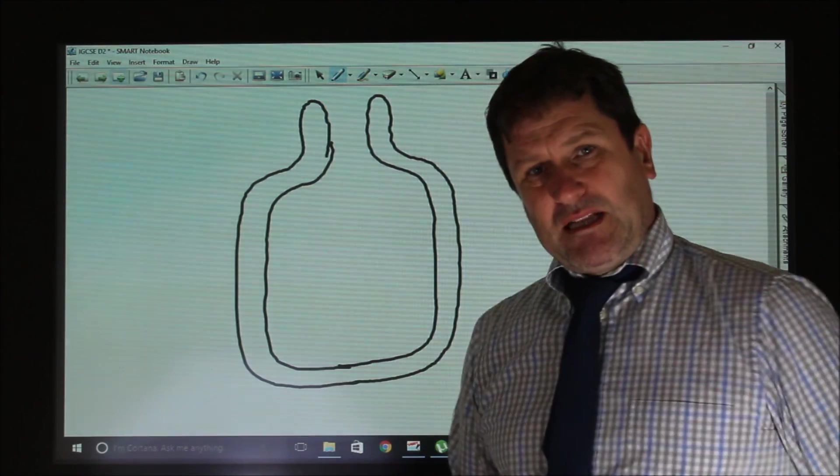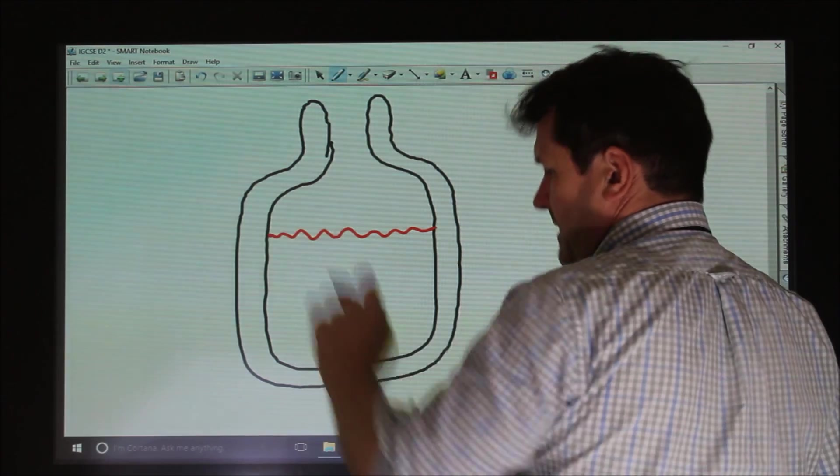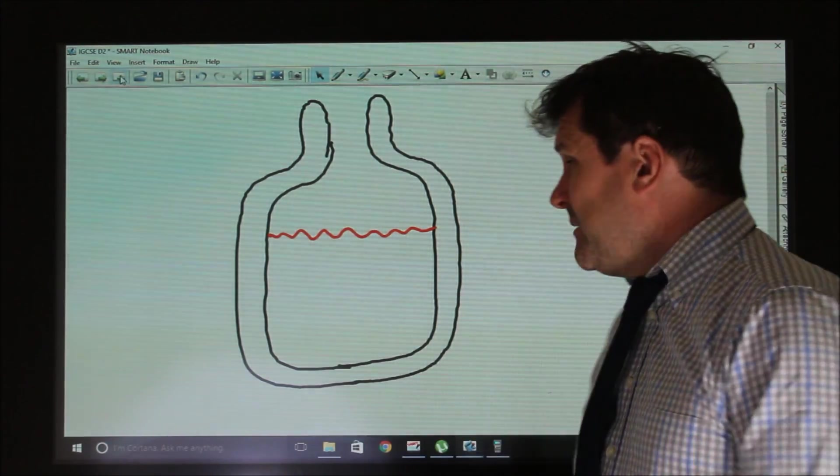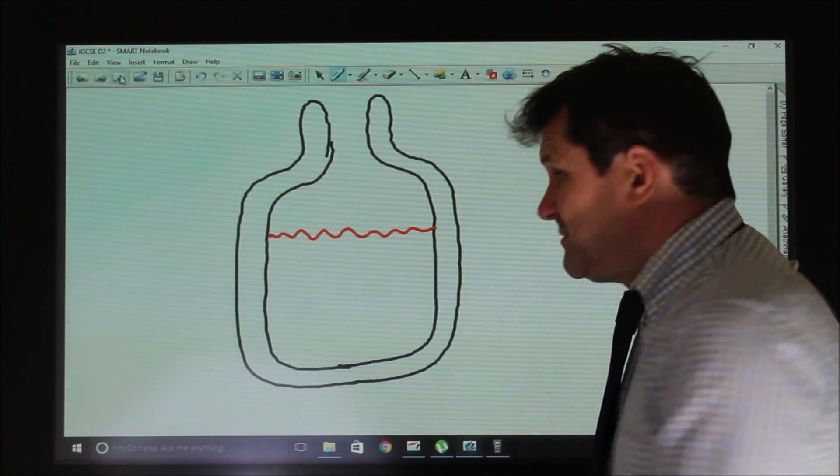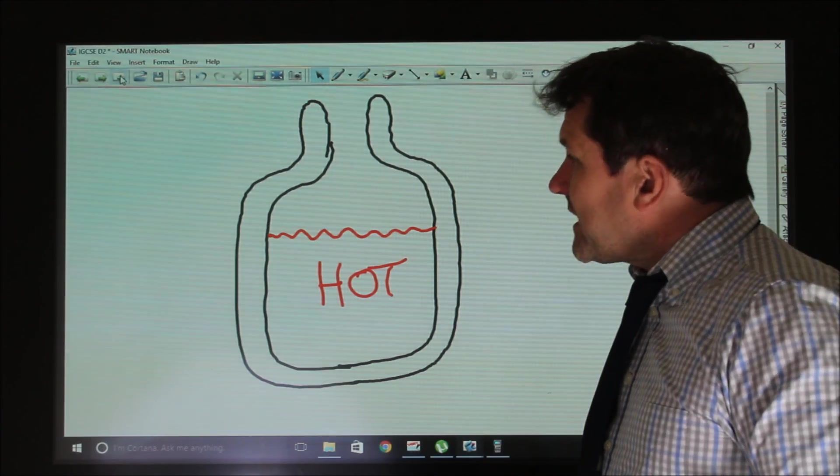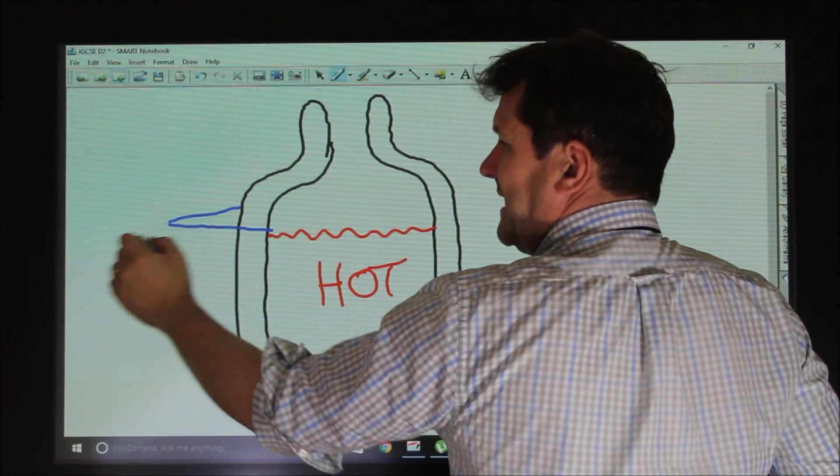This is my badly drawn vacuum flask. Inside your vacuum flask you might have a hot thing or a cold thing, but for now we'll just think of it as being a hot object. We might have hot coffee. The vacuum flask is made of glass, so the walls of the flask are made of glass.